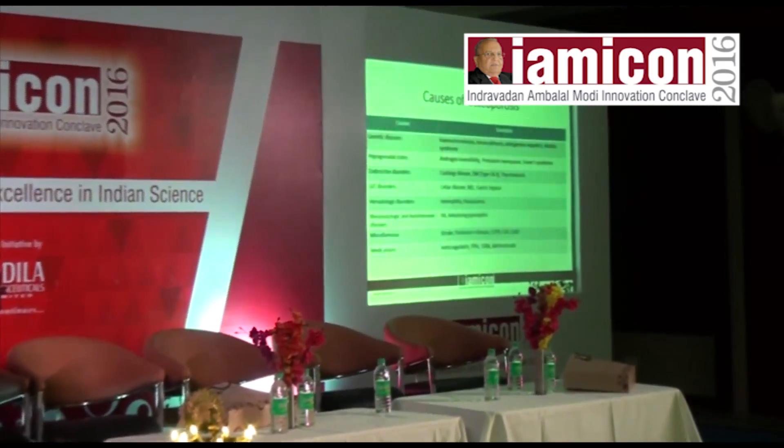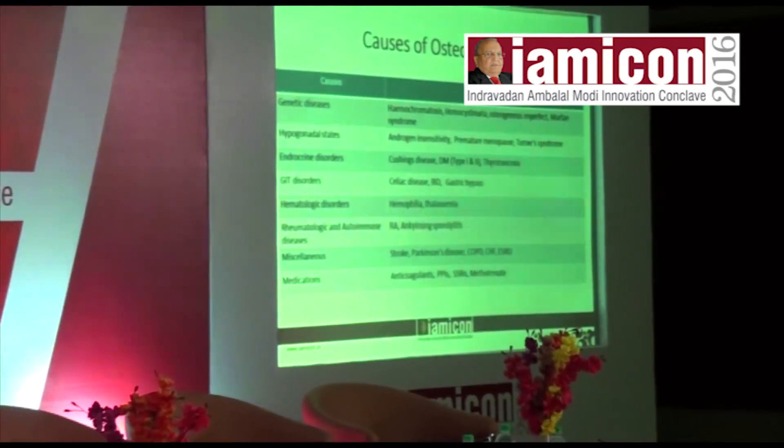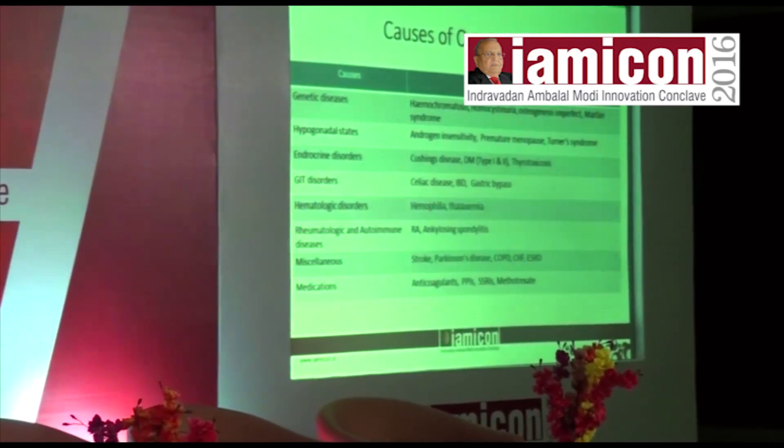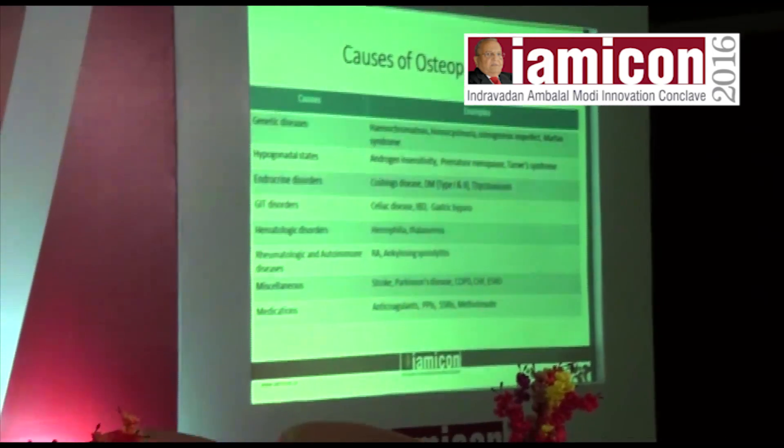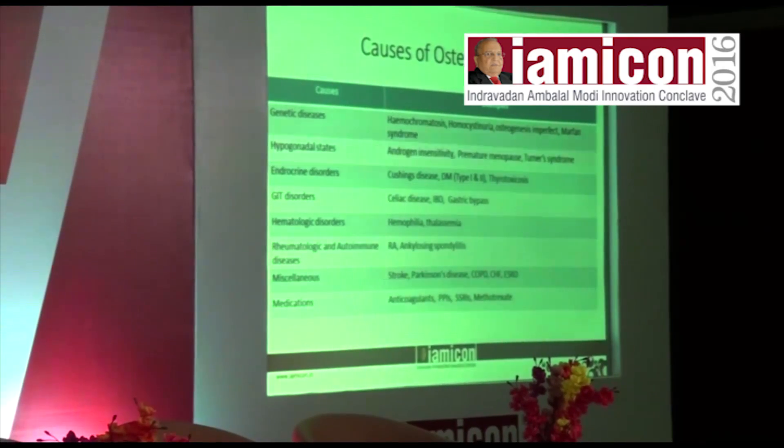GIT disorders such as celiac disease, irritable bowel syndrome, and gastric bypass; hematologic disorders like hemophilia; rheumatoid arthritis, ankylosing spondylitis, and other inflammatory arthropathies. Miscellaneous causes include stroke, Parkinson's disease, and COPD. COPD is a common cause not because of the disease itself, but because of the steroids used in treatment. CHF and end-stage renal disease also cause deranged calcium formation.